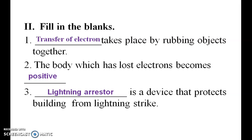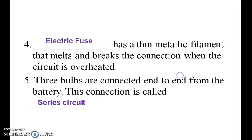Fill in the blanks. Transfer of electrons takes place by rubbing objects together. The body which has lost electrons becomes positive. The lightning arrestor is a device that protects buildings from lightning strike. Electric fuse has a thin metallic filament that melts and breaks the connection when the circuit is overheated.